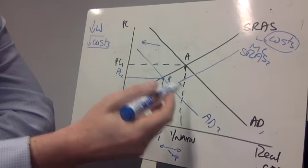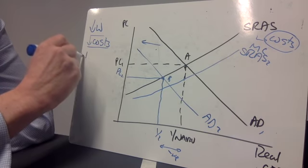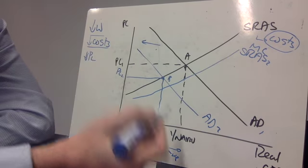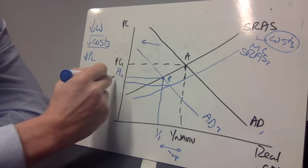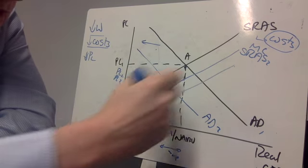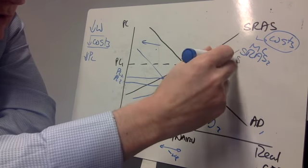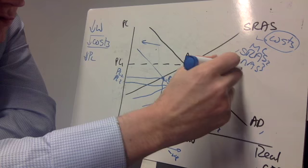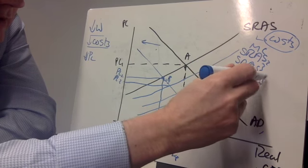As a result of which, that's leading to a decrease in the price level. Because the price level is going down, we start to get an extension in aggregate demand until eventually the economy returns to long-run equilibrium back at the NARU.